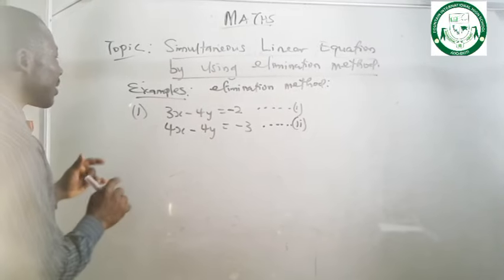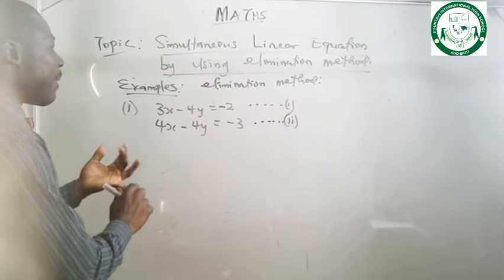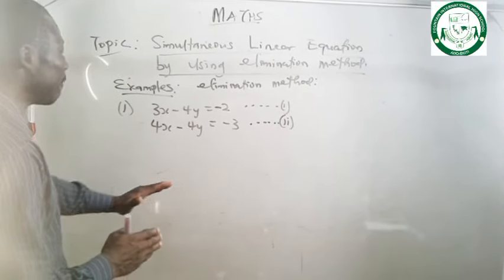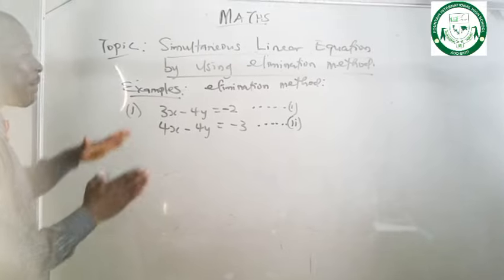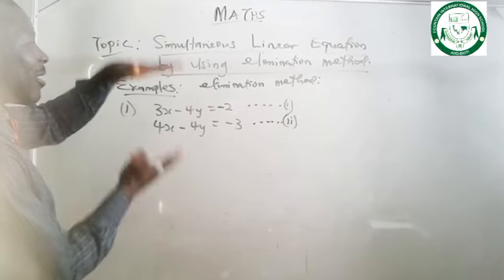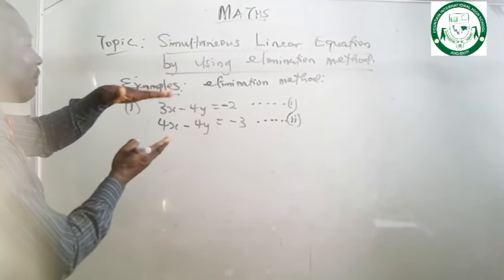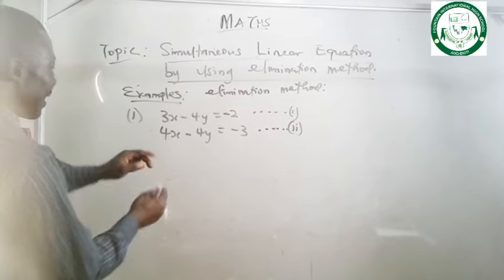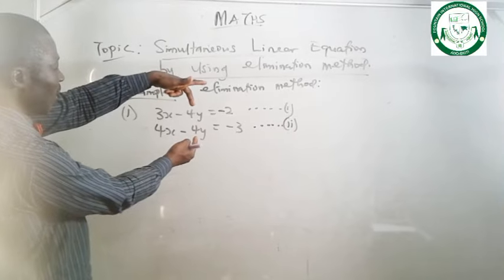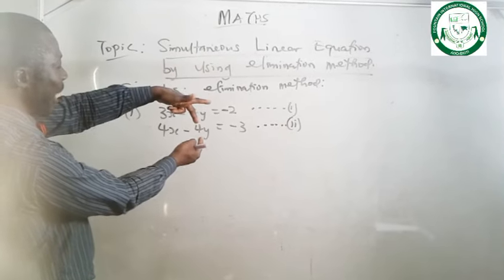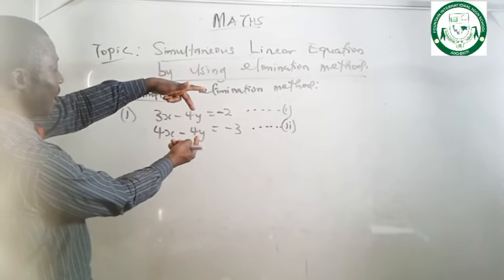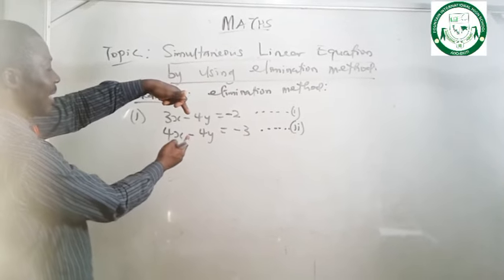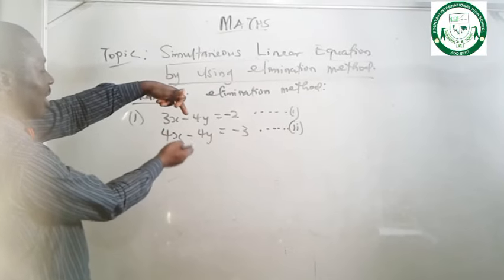Let me come again. The two rules say: the sign of the number you want to eliminate must be opposite each other — one should be positive, the other should be negative. The second rule says the number you want to eliminate must be the same. Looking at this question, I am having 4y here and 4y here — but the signs are the same, and the rule says the signs must be opposite each other.